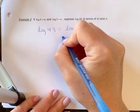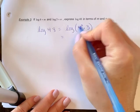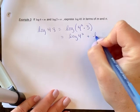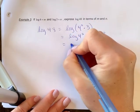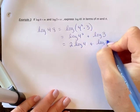Now I can apply the laws of logarithms. I'm going to expand this as log 4 squared plus log 3, and move that number out front, so I get 2 log 4 plus log 3.